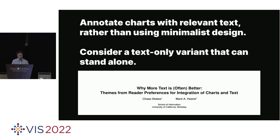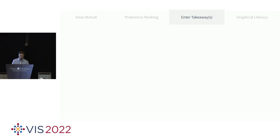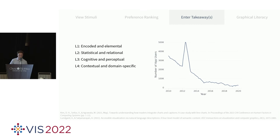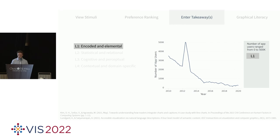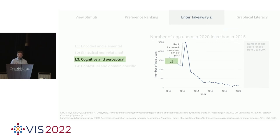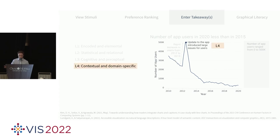Moving on to the enter-takeaways section: they used univariate line charts and Lungard and Satyana Ryan's four-level model of semantic content. L1 is encoded and elemental language — describing what's represented in an element like the y-axis. L2 is statistical and relational information — for example, 'number of app users in 2020 is less than 2015.' L3 is cognitive and perceptual information — for example, 'rapid increase in users from 2012 to 2013.' L4 is contextual domain-specific information — for example, 'an update to the app introduced large issues for users,' describing an external event. They wrote these four annotations for all generated charts and carefully counterbalanced the positions of where text was placed.